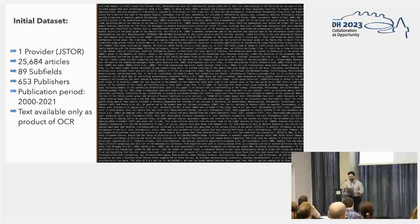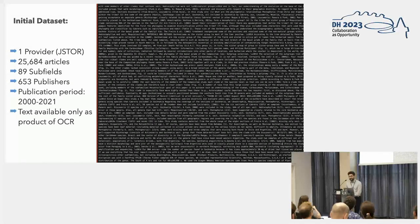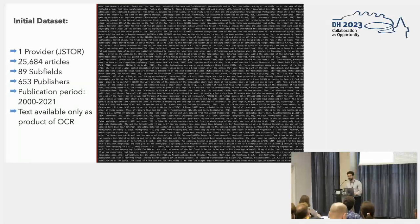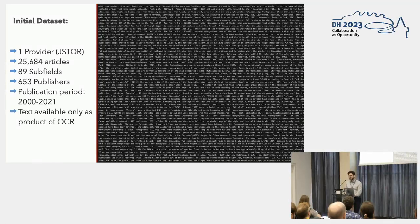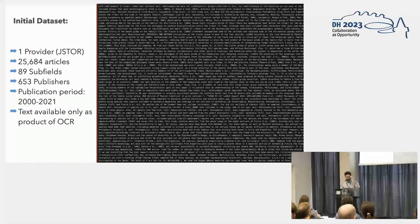Our initial dataset came from the JSTOR repository. It covered almost 25,684 articles, spanning 89 subfields of the broader humanities section, from 653 publishers, covering a publication period from 2000 to 2021. But there was one big problem: the text was available only as a product of OCR. As you can see from a real sample, this is what we got from Constellate — the entire structure of the text is lost. We don't have sections, we don't have paragraphs, and since it's a product of OCR from a previous decade, there are a lot of problems and noise that had to be firstly removed.